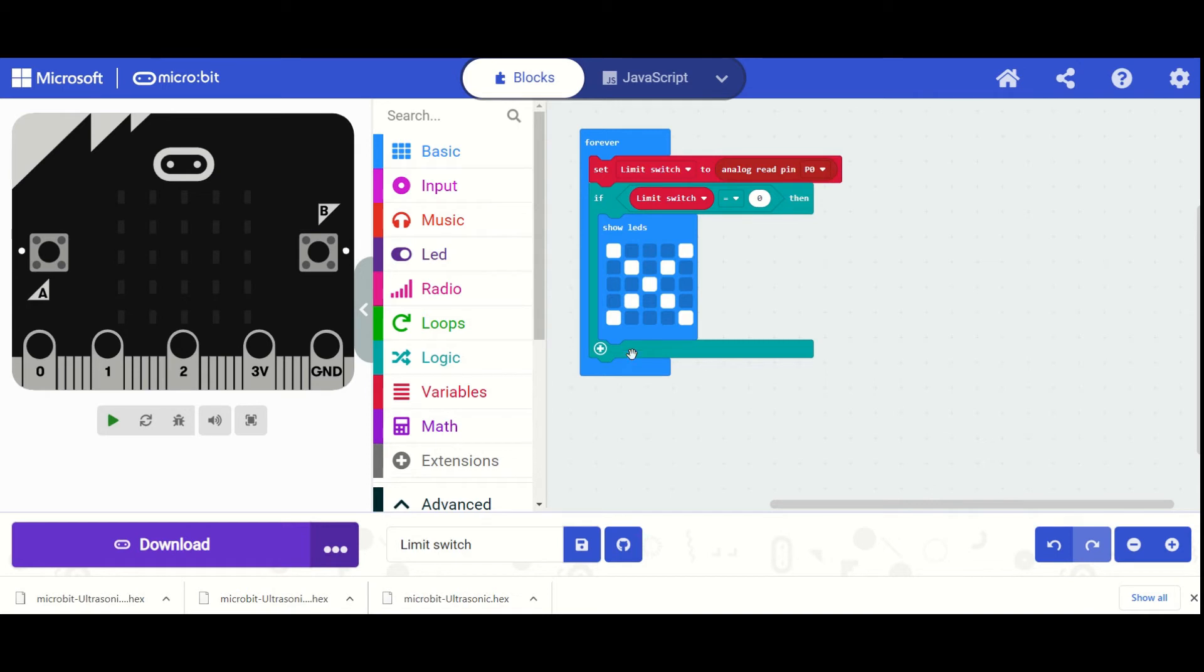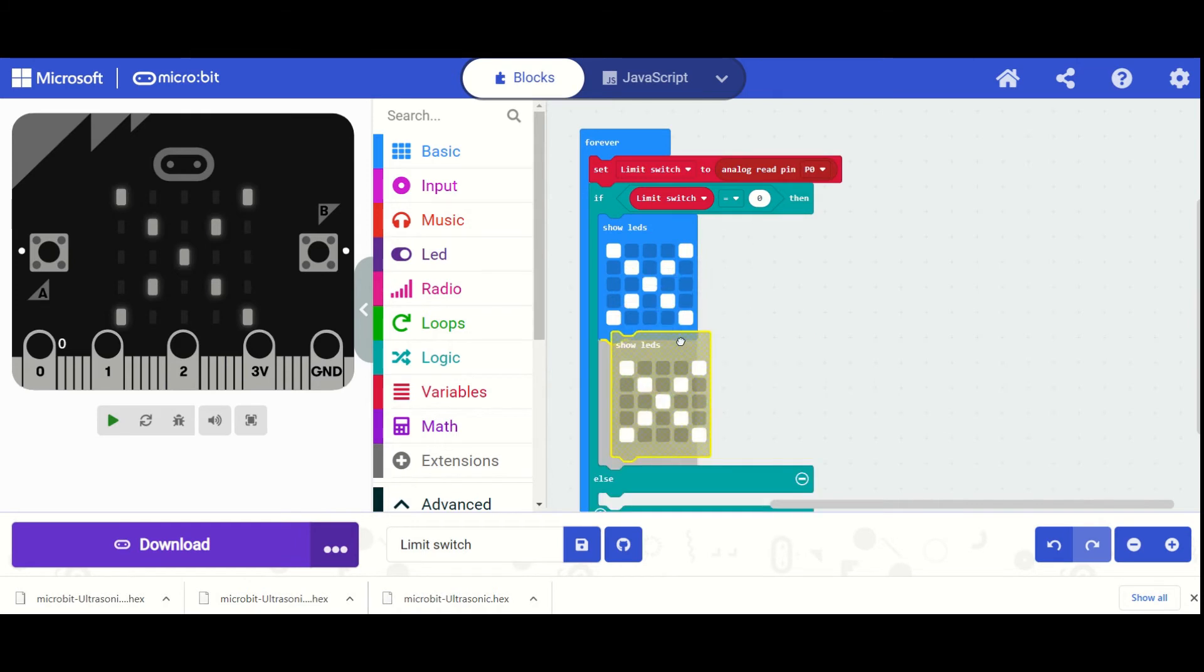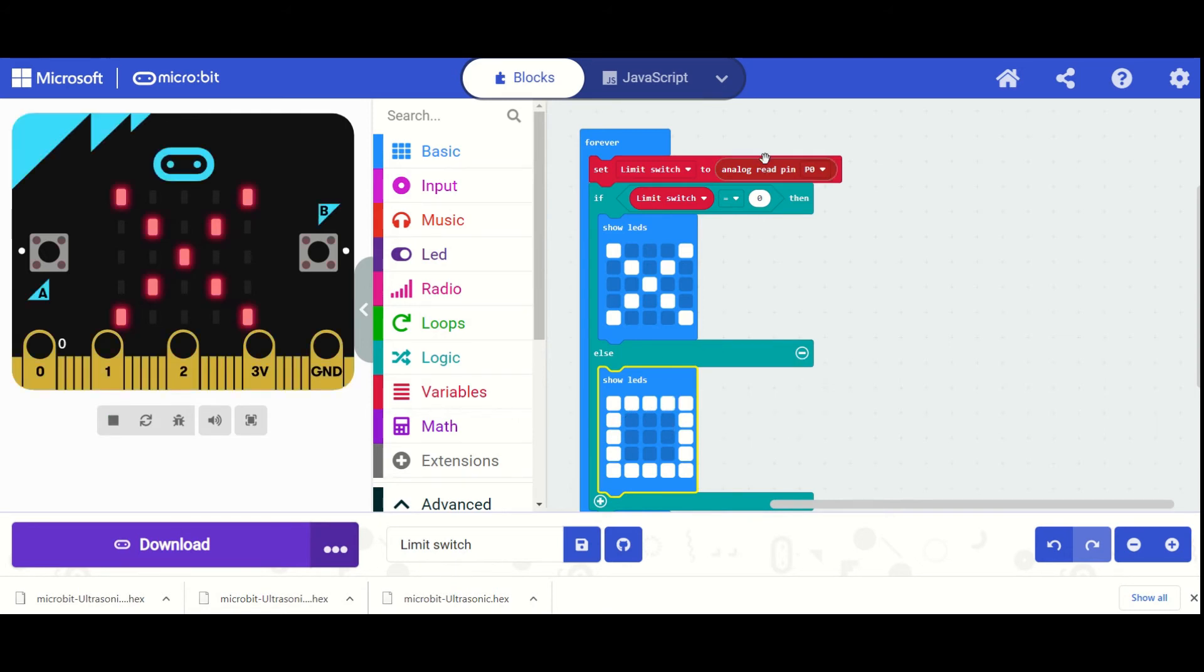Now if this is not true, we want something else to happen, so I'm just going to press this plus and it's going to say else. And we are going to duplicate this box and we're going to put it in below here. And what we're going to do is we're going to show a square on our five-by-five matrix if the switch is not being pressed down. So if it's not equal to zero, which if it's not being pressed it won't be equal to zero, so let's test this out.